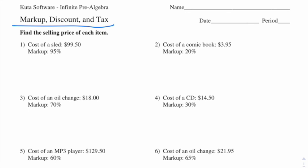This video is going to cover markup, discount, and tax. Markup and tax are the same because we're taking a percentage of the original cost and adding that back to the original cost to get the selling price. For example, in number one we're taking a 95% markup on a sled which costs $99.50.